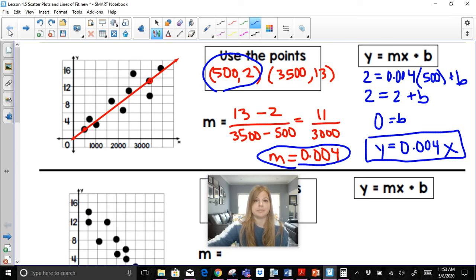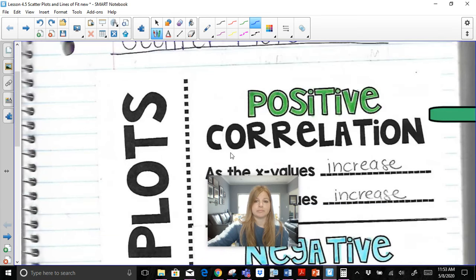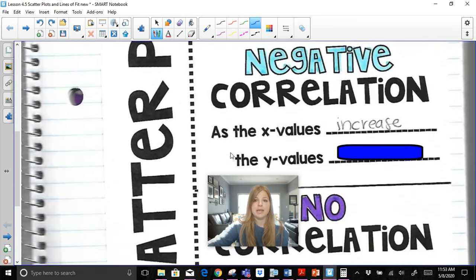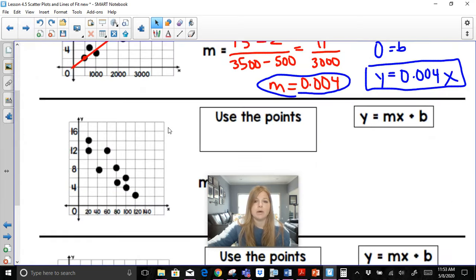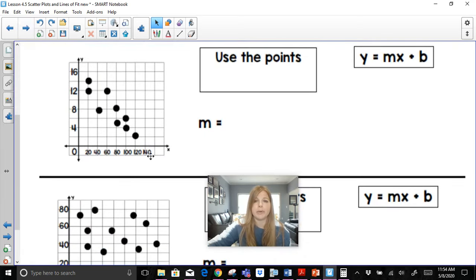Let's take a look at the next one. The next type of correlation would be a negative correlation. And a negative correlation happens when the X values increase, but the Y values decrease. So as one value goes up, the other value goes down. So for this example here, I see a graph that would definitely show a negative correlation. As the X values increase, the Y values are generally decreasing.